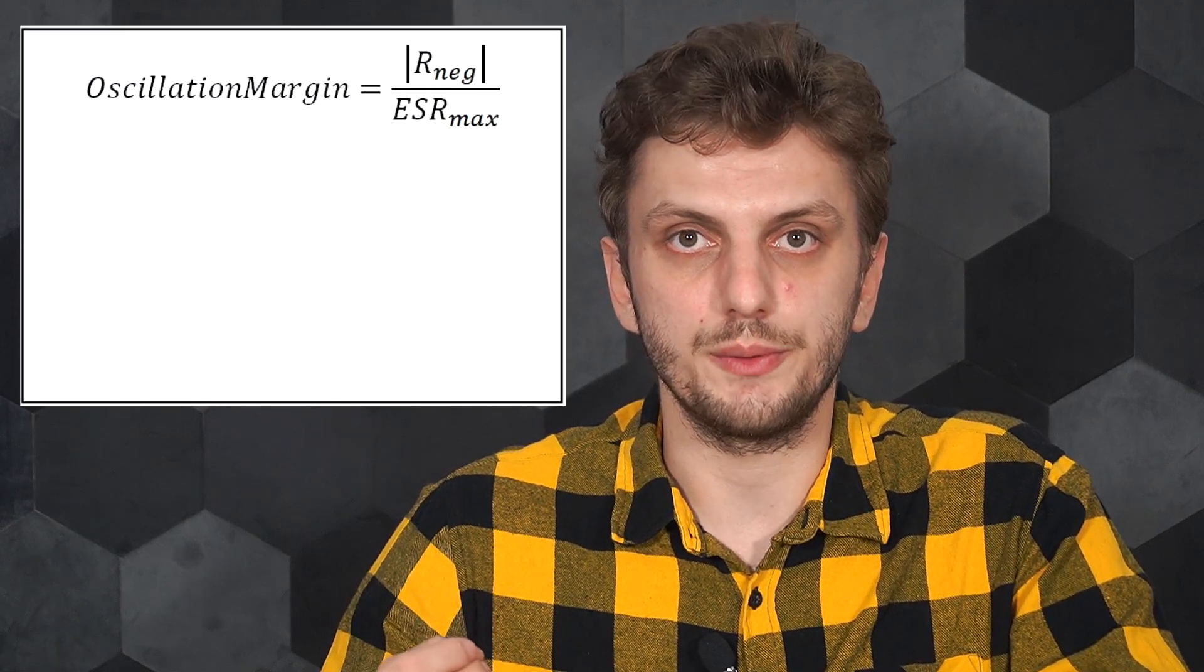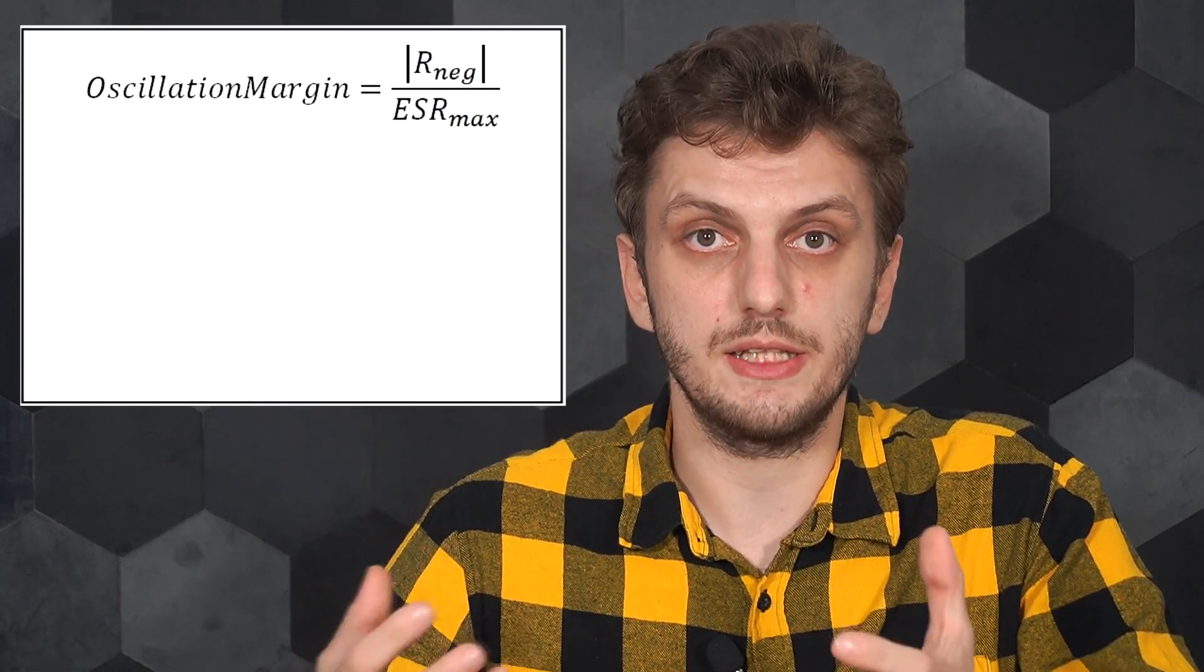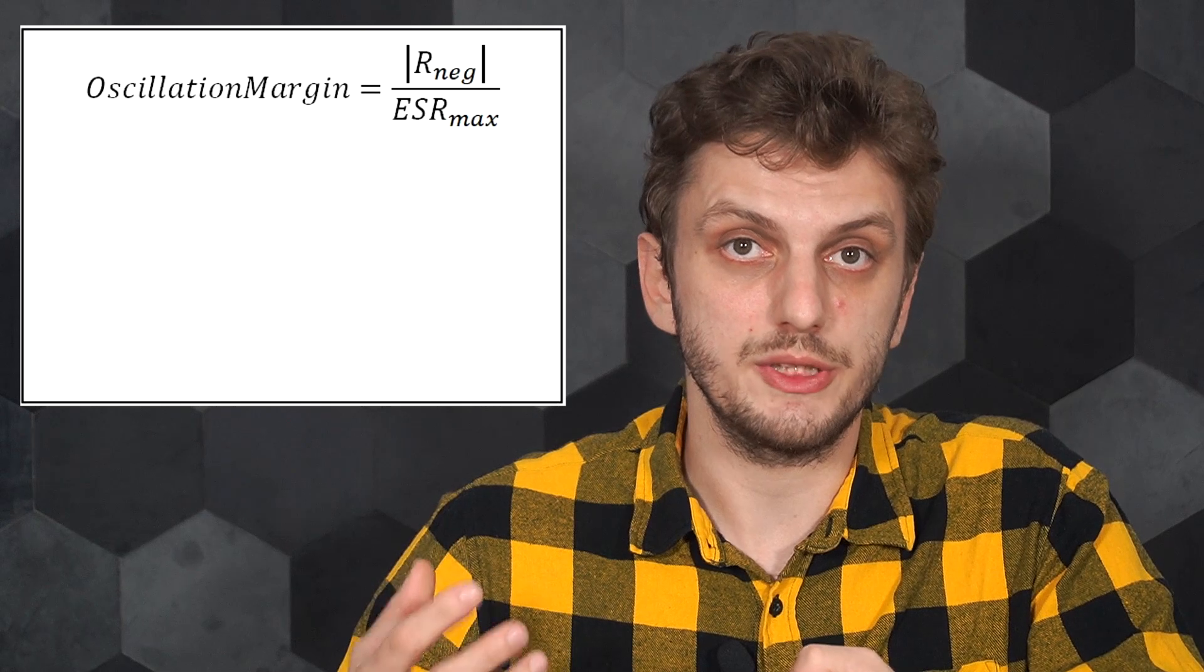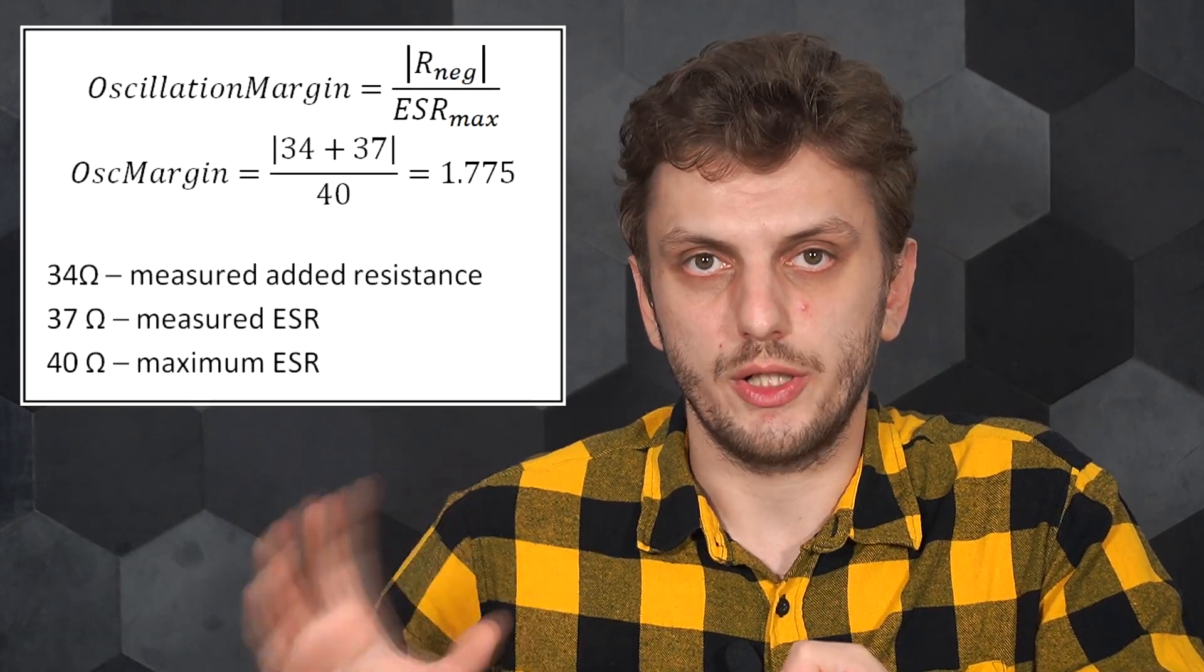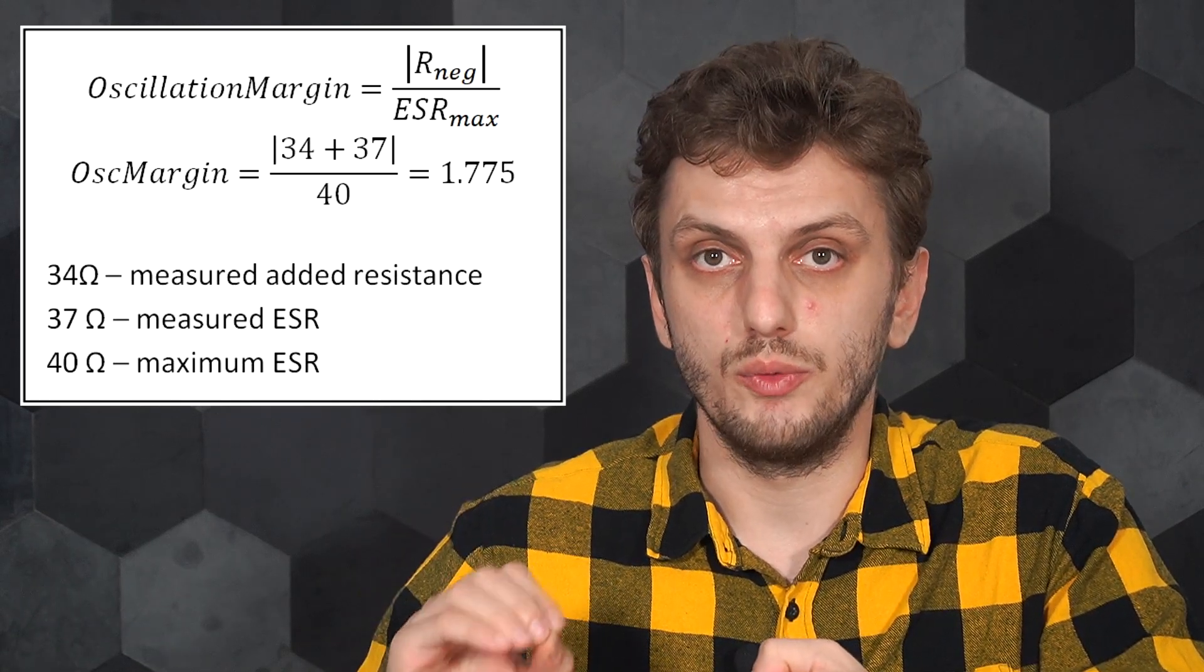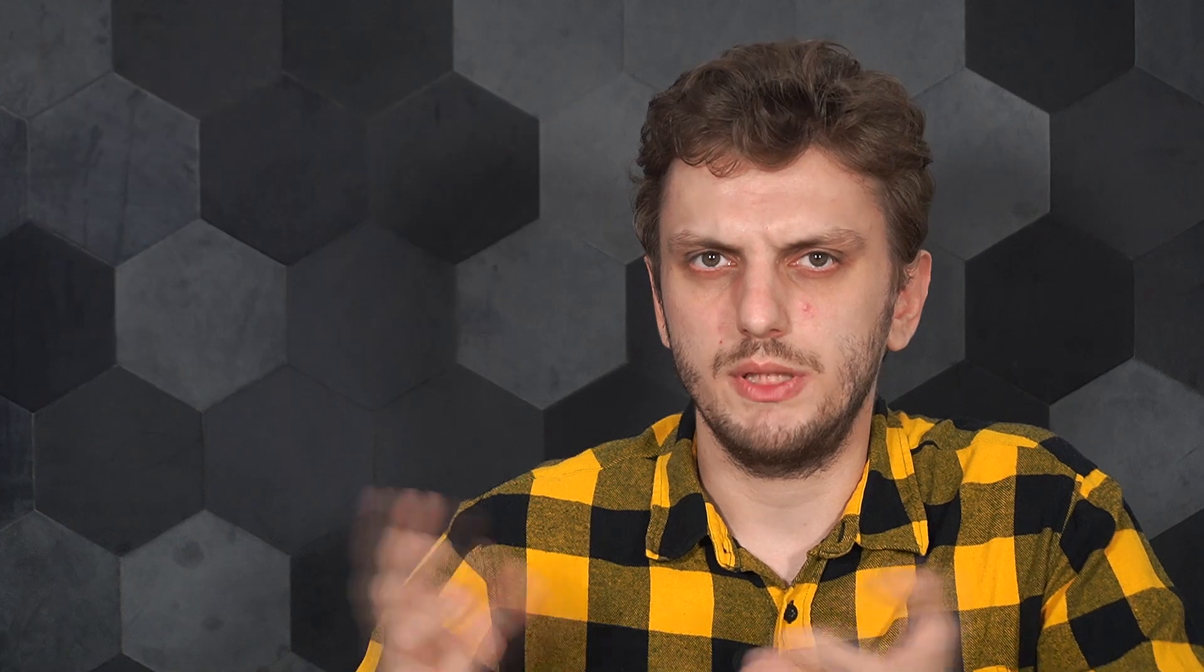So we got a negative resistance of 71 ohms. Is that good or bad? Well a more useful way of expressing this value is in the form of the oscillation margin. How many times is the negative resistance greater than the maximum ESR that the crystal can have, a parameter that is present in the datasheet. So for our particular crystal that has a maximum ESR of 40 ohms, this yields a value of 1.77. But what does that mean? I mean it's above 1 so it oscillates, but we could already see that.